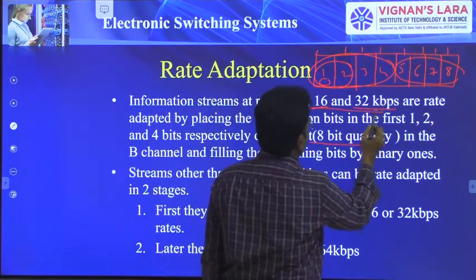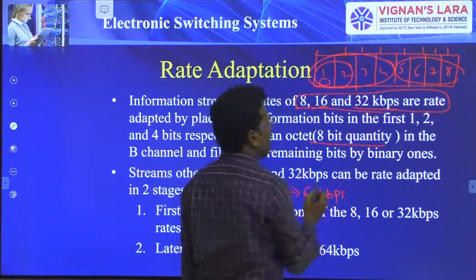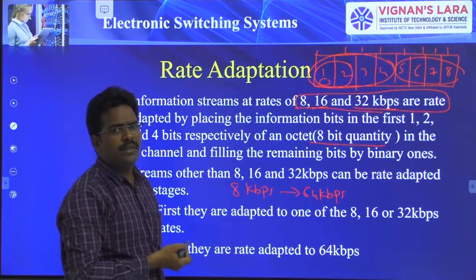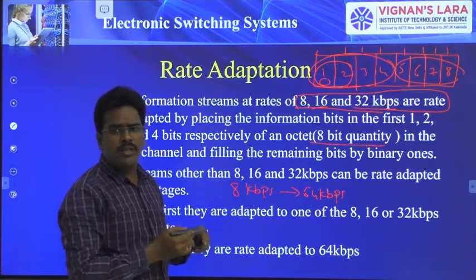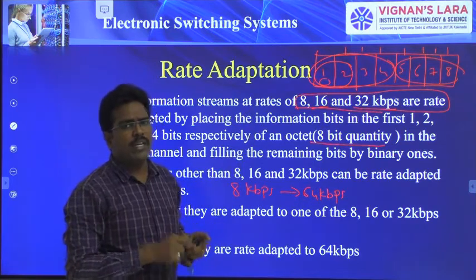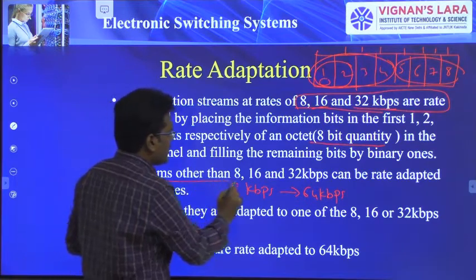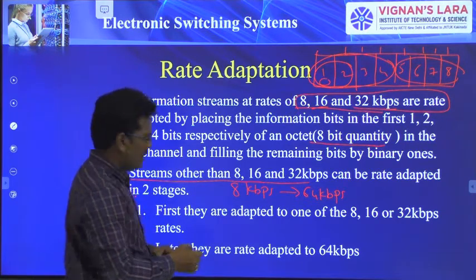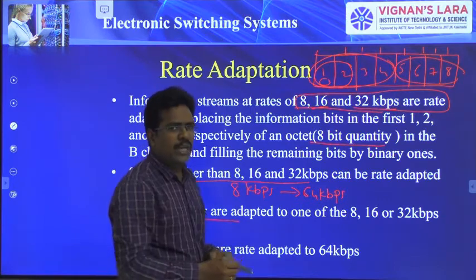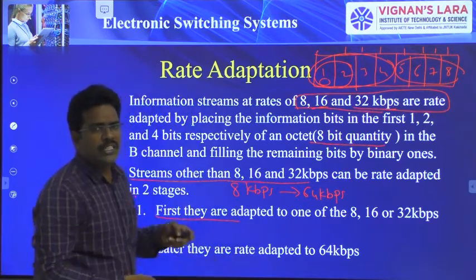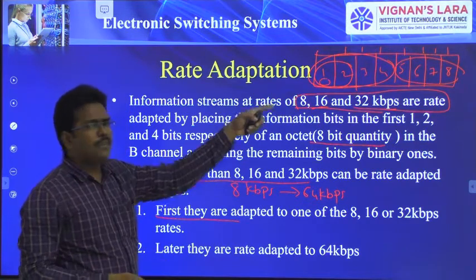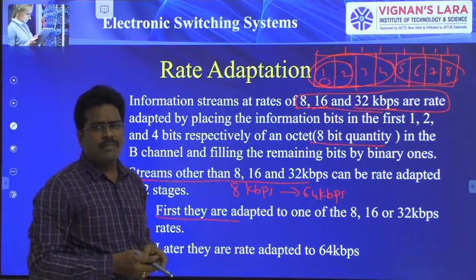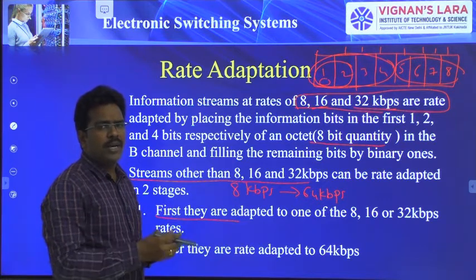There are other signals with bit rates other than 8, 16, or 32 kbps. We can also convert those bit rates into 64 kbps in two stages. Stage 1: they are first rate adapted to either 8, 16, or 32 kbps. Stage 2: the same method is then applied to convert them into a 64 kbps signal. This is about the rate adaptation technique used to transform lower bit rates to higher bit rates.